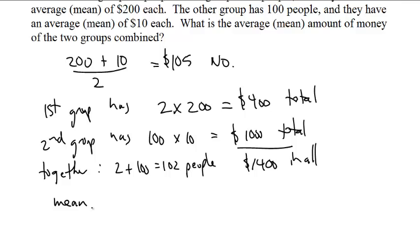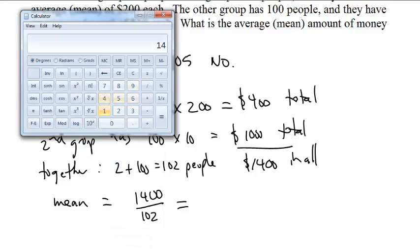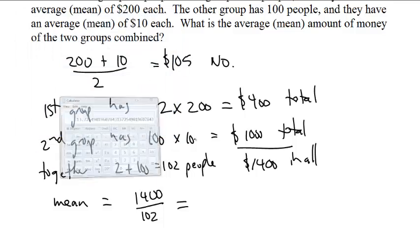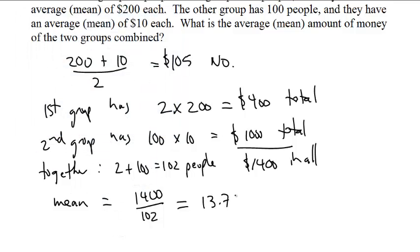So the mean is 1,400 divided by 102, which is going to be a little bit less than 14. Let's say $13.73 on average.